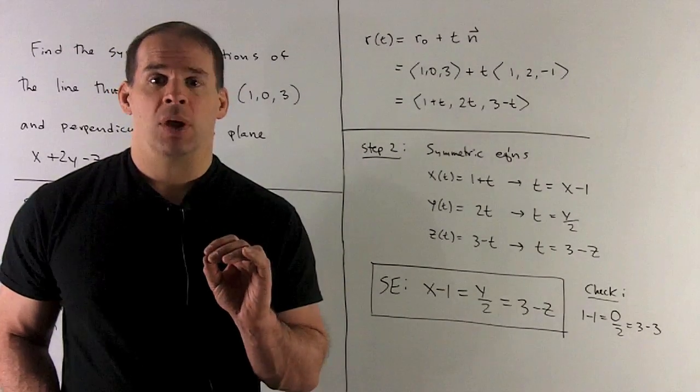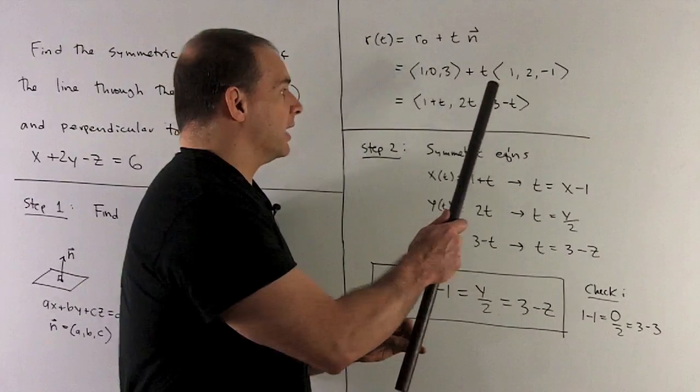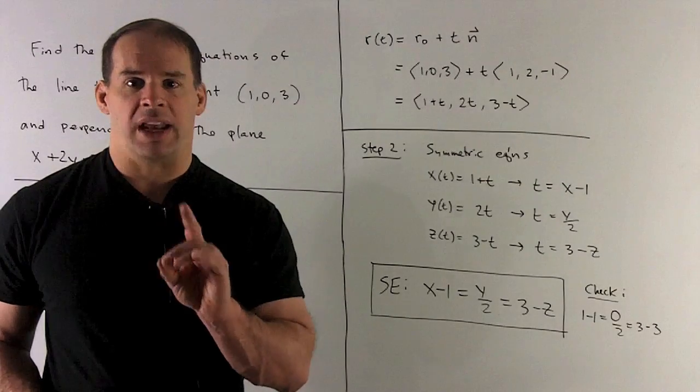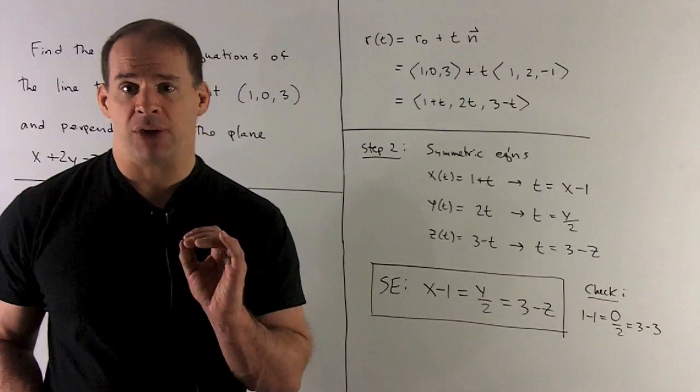The way we do that, we're going to set each coordinate to x, y, and z, solve for t, and then I can get rid of the t by just letting what we solve for be equal to each other, and that's what we call our symmetric equations.